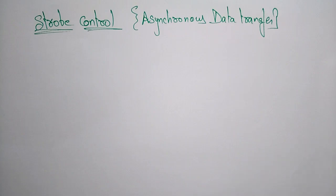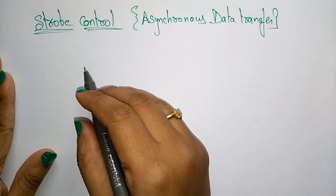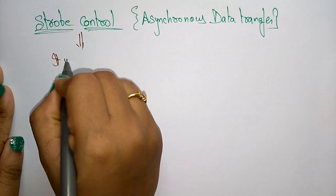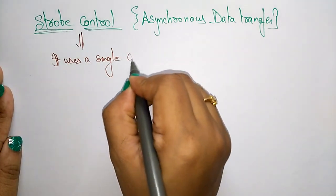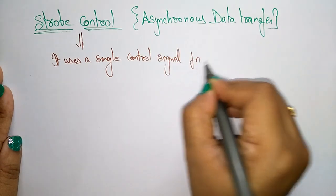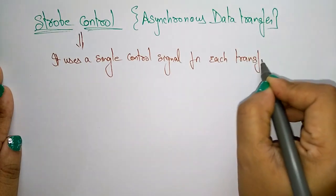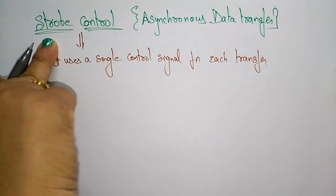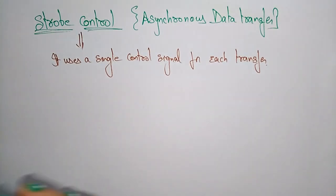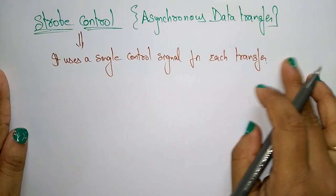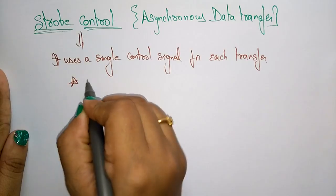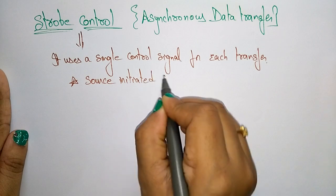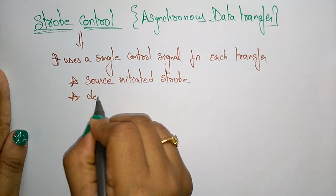Let us continue with asynchronous data transfer. In the previous video I explained the basic concept of asynchronous data transmission. Now let us see the methods used in asynchronous data transmission. The first method is the strobe control data transfer. The strobe control method of data transmission uses a single control signal for each transfer. That control signal is called a strobe. The strobe may be two types: source-initiated strobe and destination-initiated strobe.